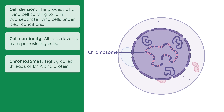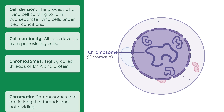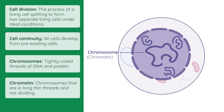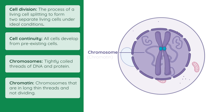They keep a huge amount of information in a very tiny space — the nucleus. When a cell is not dividing, the chromosomes are in long, thin threads called chromatin. At cell division, the chromatin shortens to form a number of clearly distinguishable chromosomes.